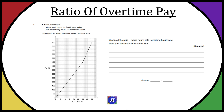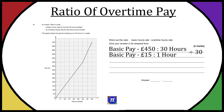For basic pay, as I briefly said before, we have £450 for 30 hours — we can see that first line, and the first 30 hours is written in the question as well. So 30 hours is £450. We want to work out how much he earns per hour for basic pay, so let's divide both sides by 30 to get one hour, and we get £15. So basic pay is £15 every hour.